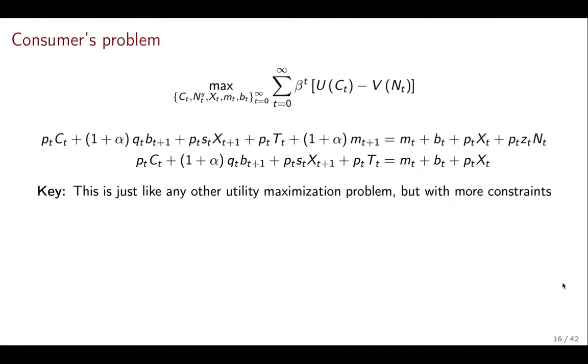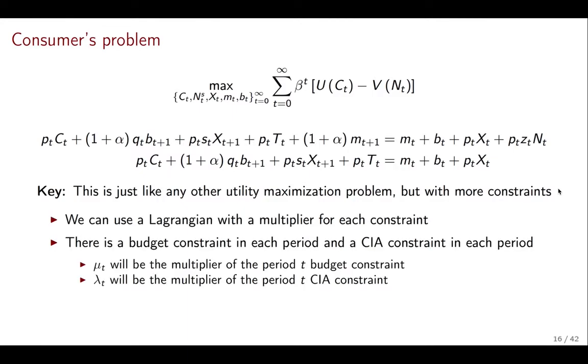So now that we've solved the labor market, we can start discussing the consumer's problem. And so the consumer's problem here, the same we had before, we have the sum of discounted utilities. We want to maximize that subject to a sequence of budget and cash-in-advance constraints. How to solve this? We have a problem because we have infinitely many periods. But that's actually not that different from what we've done before. The key is that it looks exactly like problems we've done before, but just with more constraints. And so we can use the same Lagrangian method that we had. But we just need to add a multiplier for every constraint in every period. So, because we have a budget and a cash-in-advance constraint in every period, what we're going to have is μt is going to be the multiplier of the period t budget, and λt will be the multiplier of the period t cash-in-advance constraint.